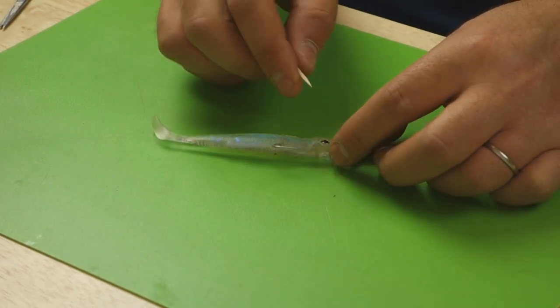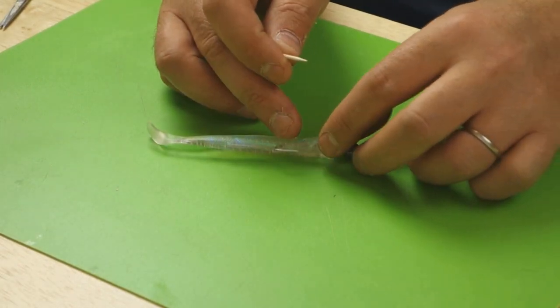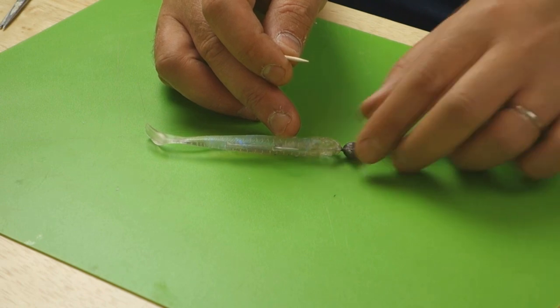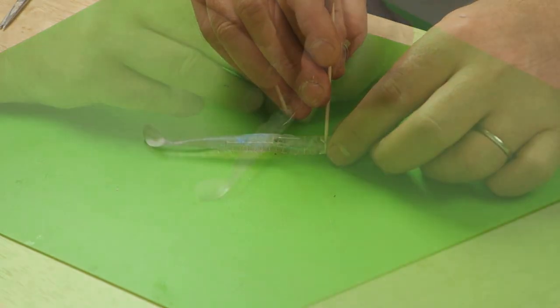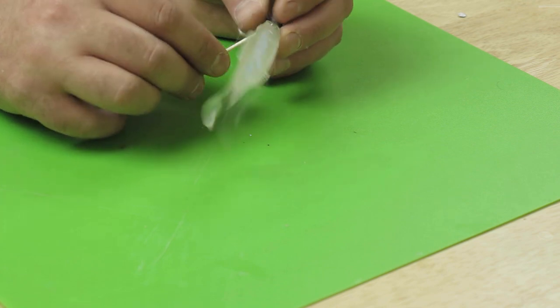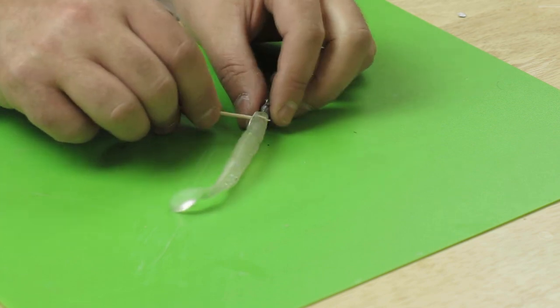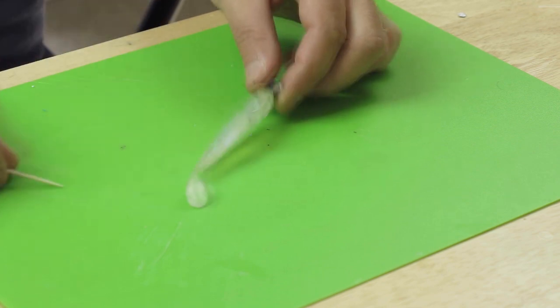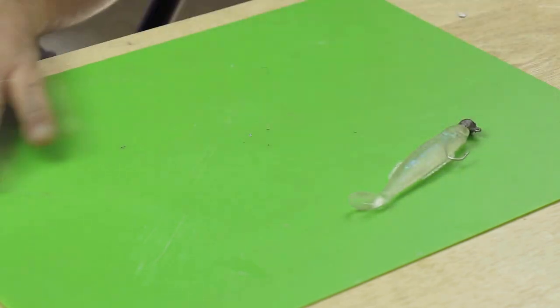So the first job I'm going to do is just poke out that other eye and then stab through between the eyes just to make a hole. So I can put that to one side for a second.